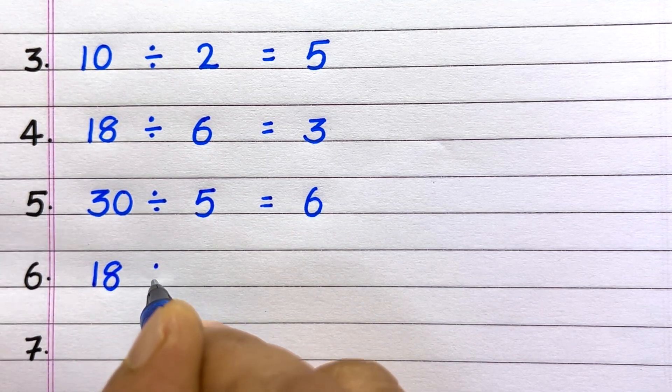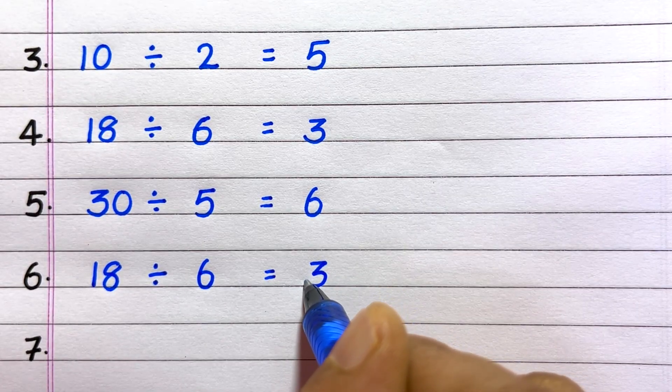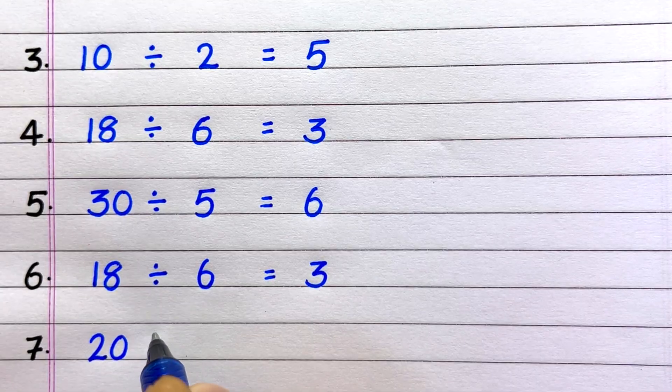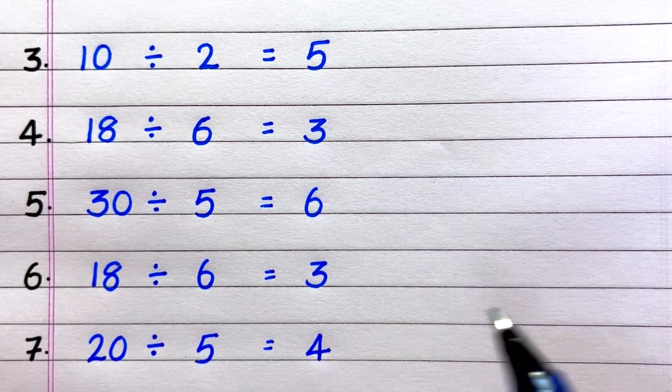Sixth, 18 divided by 6 equals 3. Seventh, 20 divided by 5 equals 4.